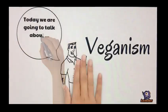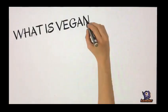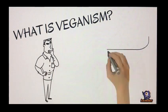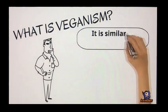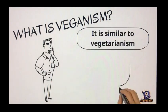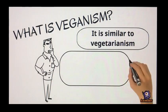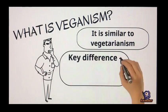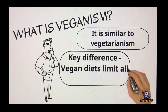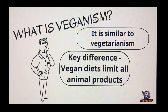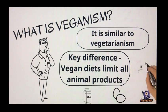Today our group will be talking about veganism. Veganism is similar to vegetarianism. The key difference between the two lifestyles is that vegans do not just limit themselves to not eating animal meats. Instead, vegan diets limit all animal products. This includes foods such as meats, dairy, eggs, and even honey.